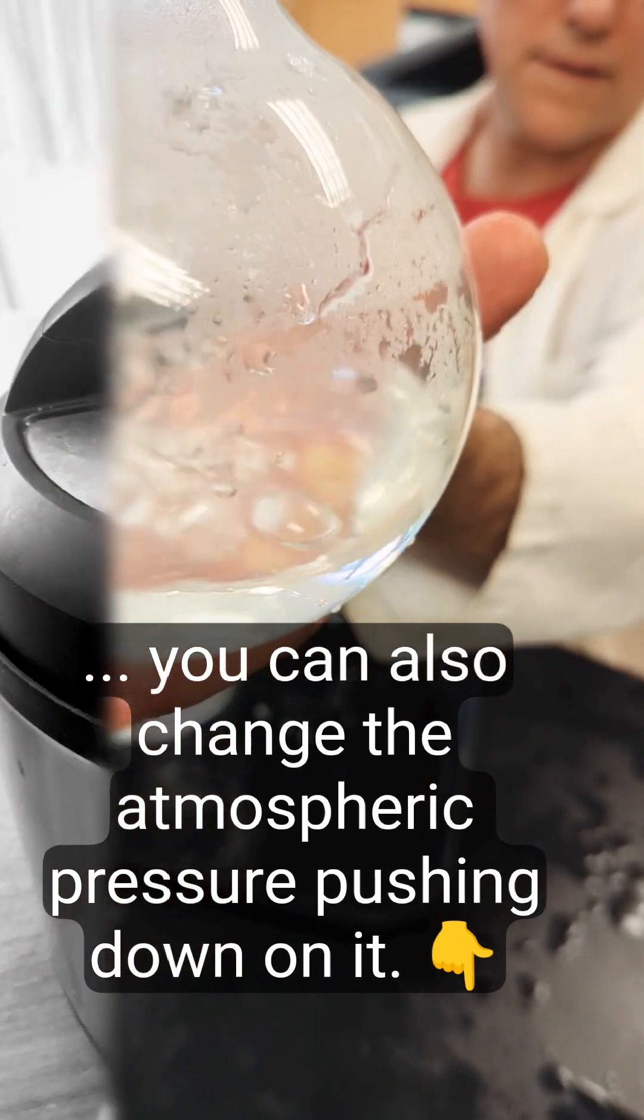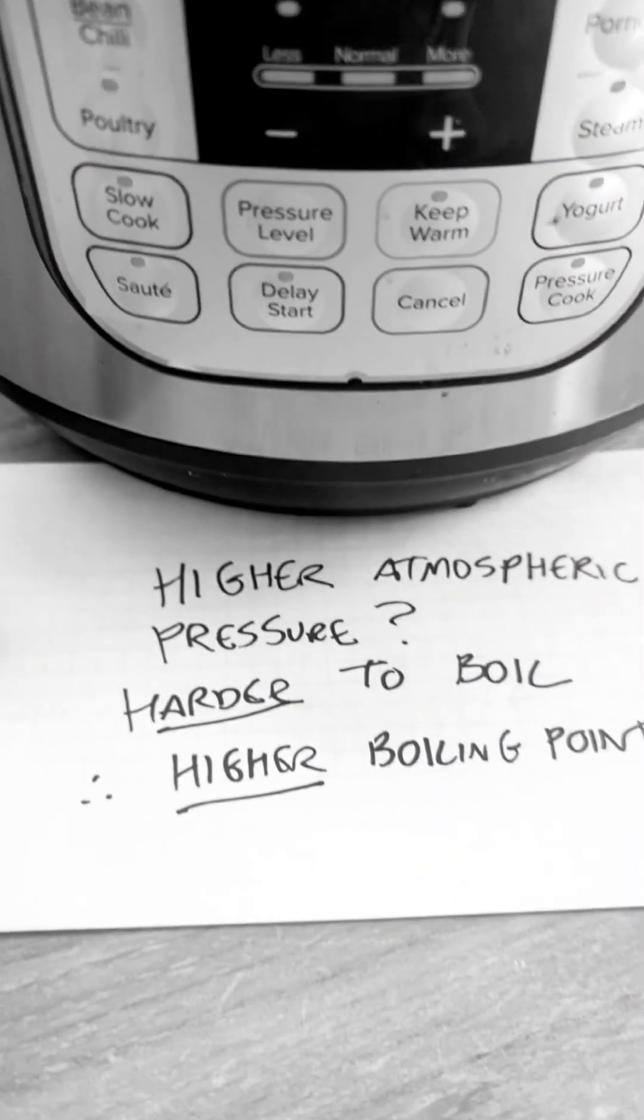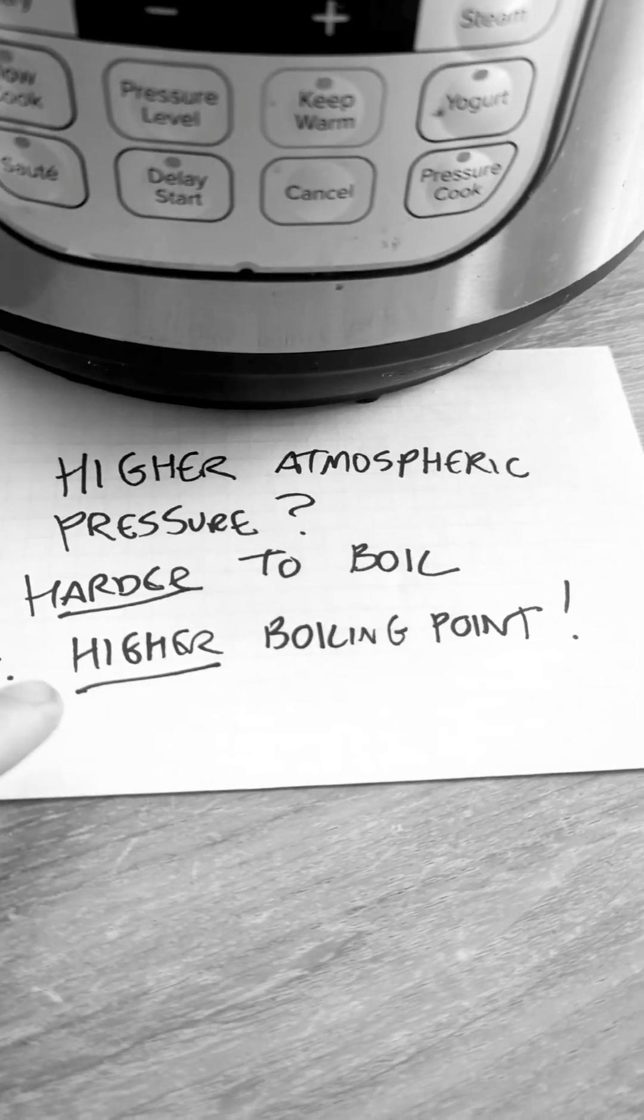And I know that sounds weird, but you already know some examples of this. Pressure cookers, for instance, work because the higher pressure inside them makes it harder for water to boil, cooking the food faster.